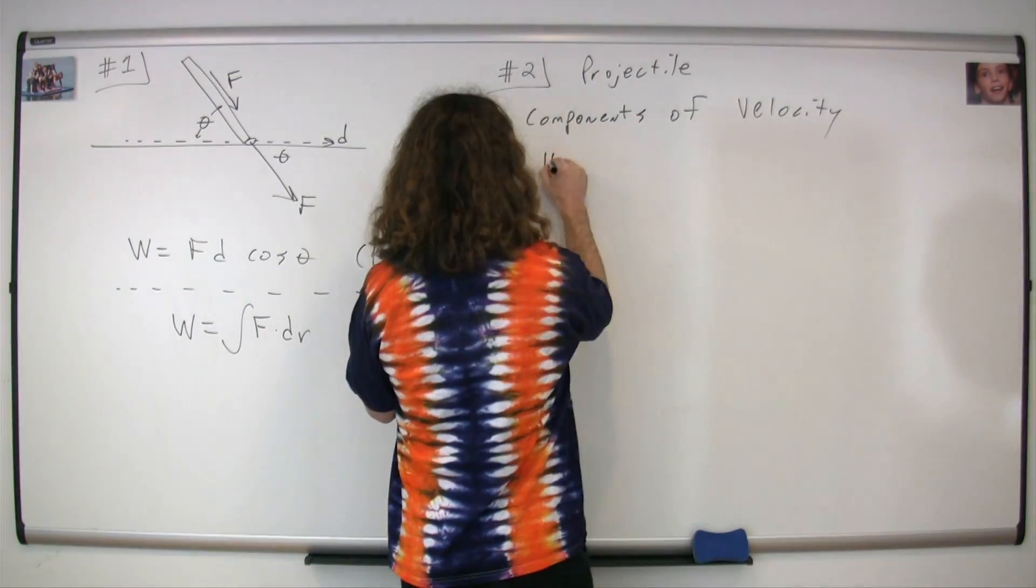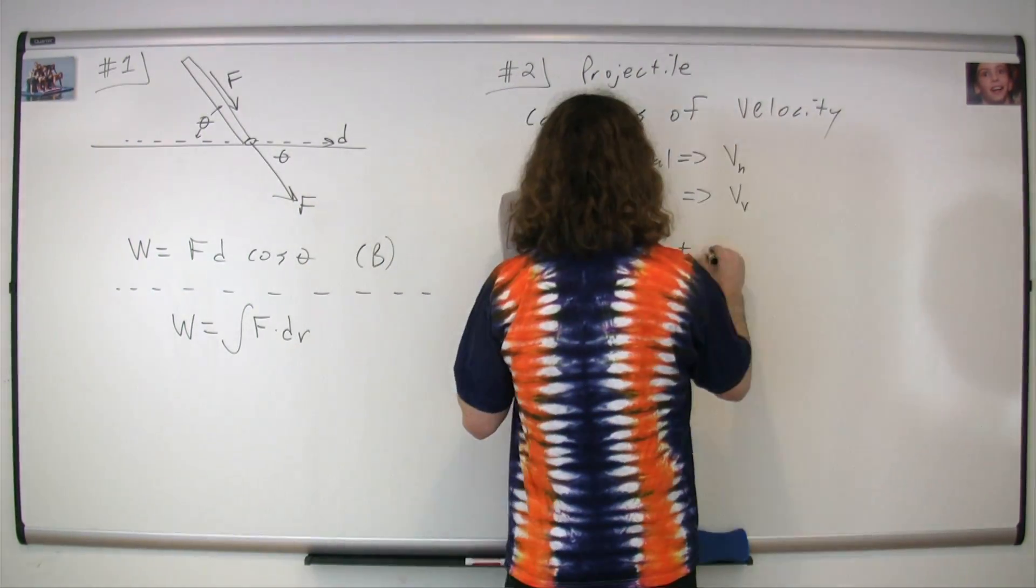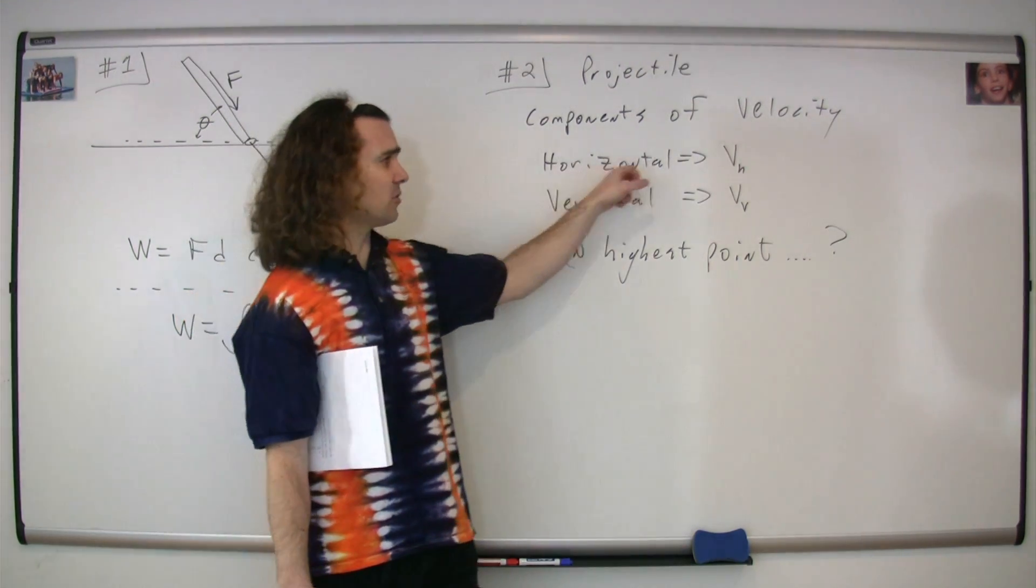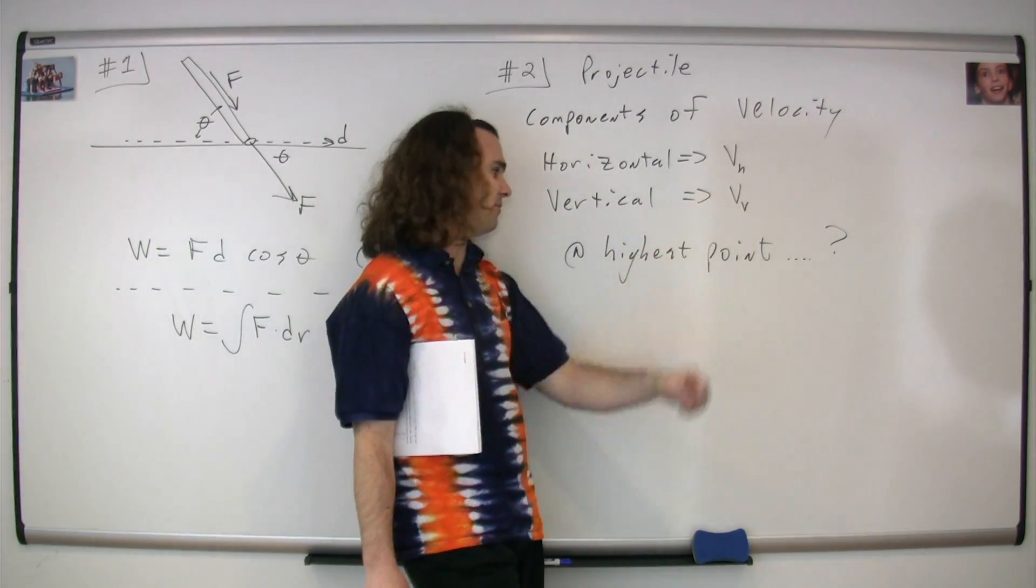We have a projectile and we know the components of the velocity. In the horizontal direction that's v sub h, in the vertical direction that's v sub v.